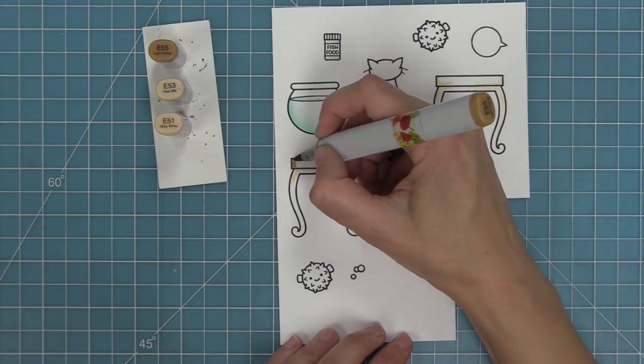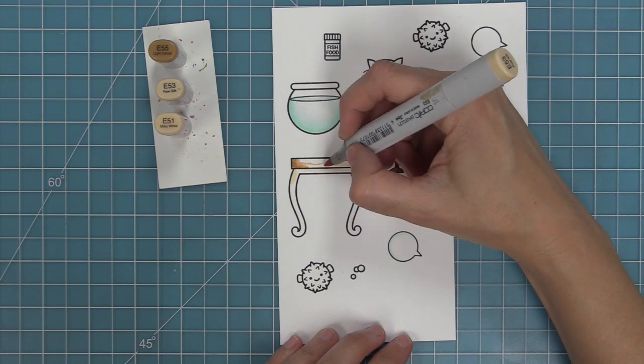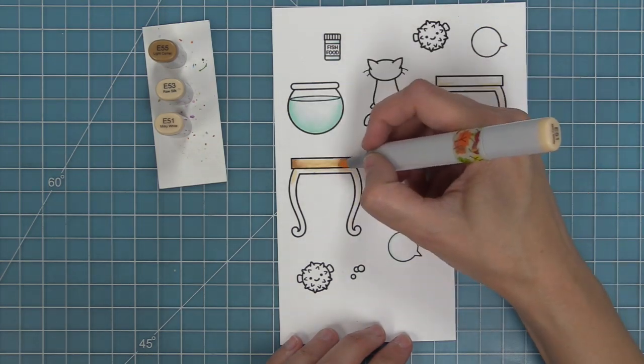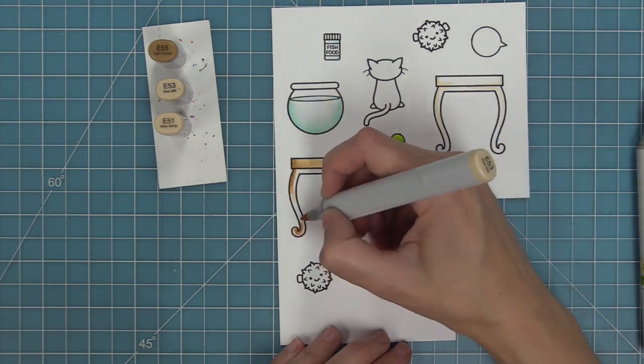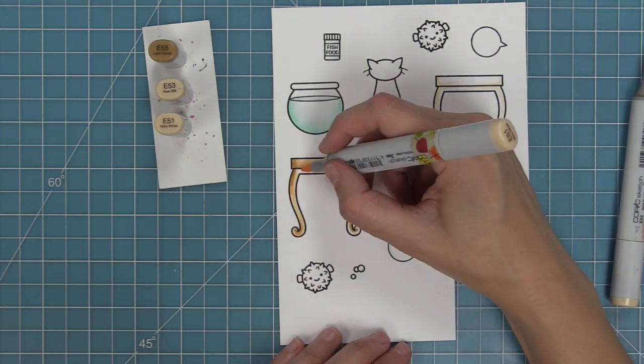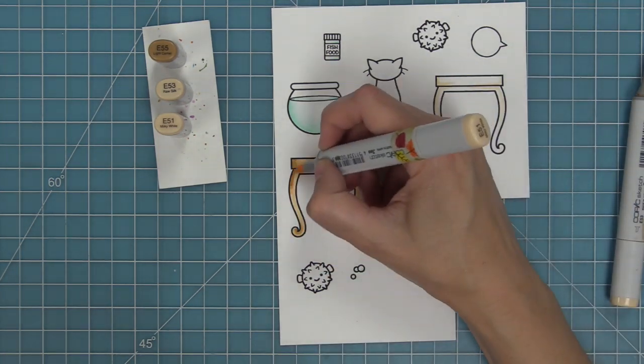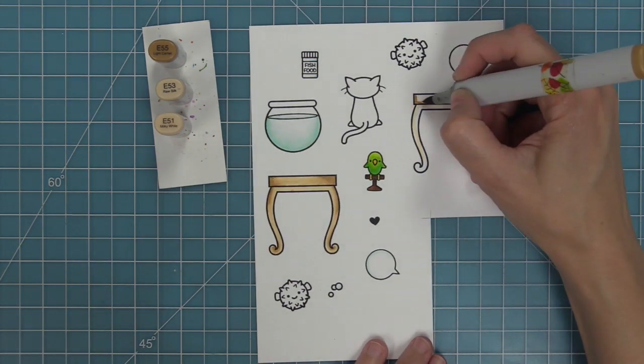When I'm coloring big areas, I like to lay down my lightest marker first. It's going to tell me where my darkest areas are going to be. Then I put my darkest, then my medium, then my light. The reason I lay down that light color first is because it wets the paper and I find it easier to blend between my markers.